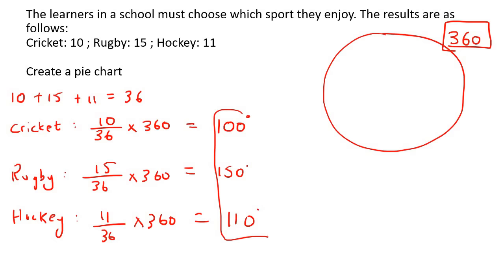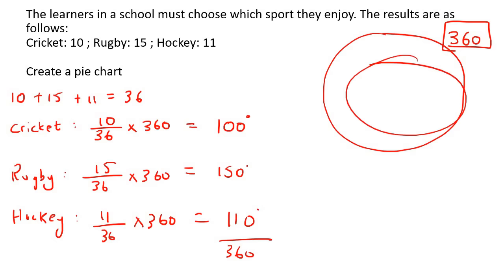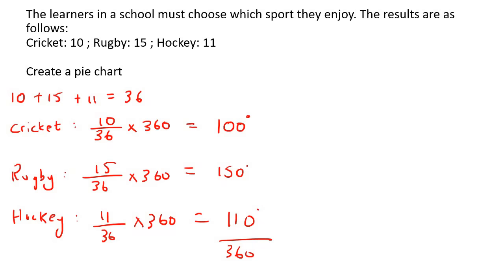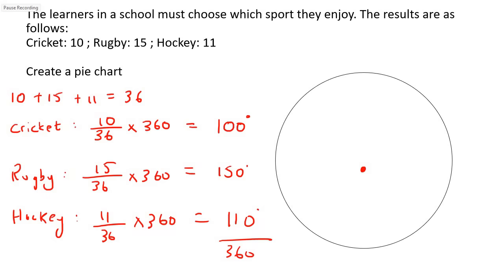If you add up all of these degree values, it's going to give you exactly 360, because we have to go all the way around. Now let's see how we're going to do this with a protractor. Step one: you definitely need to draw a circle. The size doesn't matter — the bigger the better, because the bigger you make the circle, the easier it will be to use the protractor accurately.